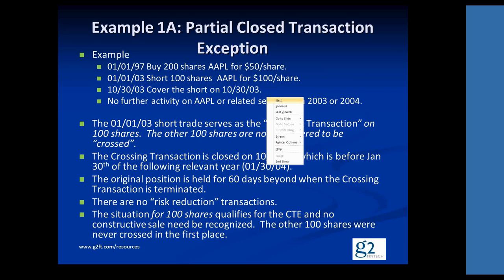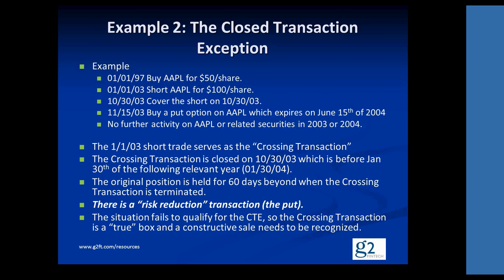We covered prior to January 30, 2004, and we held on to the shares for 60 days. But rule number three, we failed. We have a risk reduction transaction. So as soon as we fail the risk reduction transaction, we have to consider that we've failed the CTE. It might qualify for the SHE, but only if the risk reduction transaction is disposed of — which it isn't, at any point relevant for 2003.